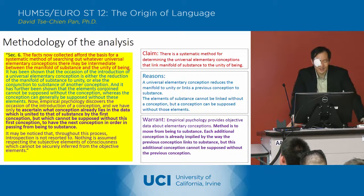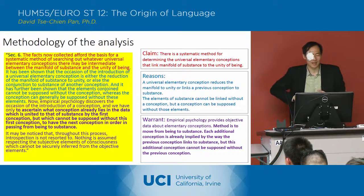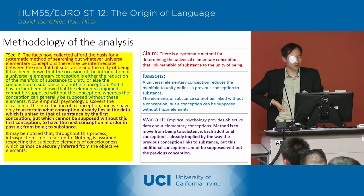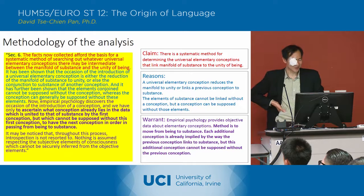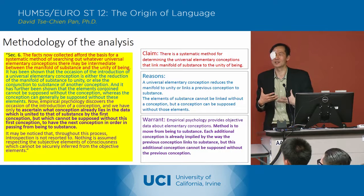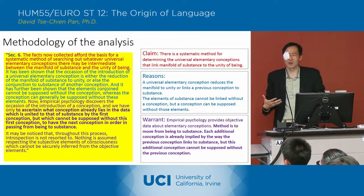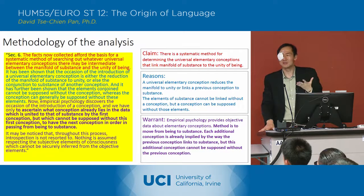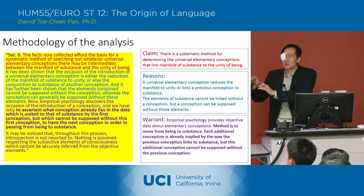He goes to the warrant and gives his methodology a name: empirical psychology. Empirical psychology discovers the occasion of the introduction of the conception, and we have only to ascertain what conception already lies in the data which is united to that of substance by the first conception, but which cannot be supposed without this first conception, to have the next conception in order in passing from being to substance. What he's saying is that empirical psychology is the name of his method — he's looking at what's going on in our mind in order to draw conclusions about how we take experience and reduce it to unity. The data he's using is the workings of our mind, and the method is to move from being to substance.